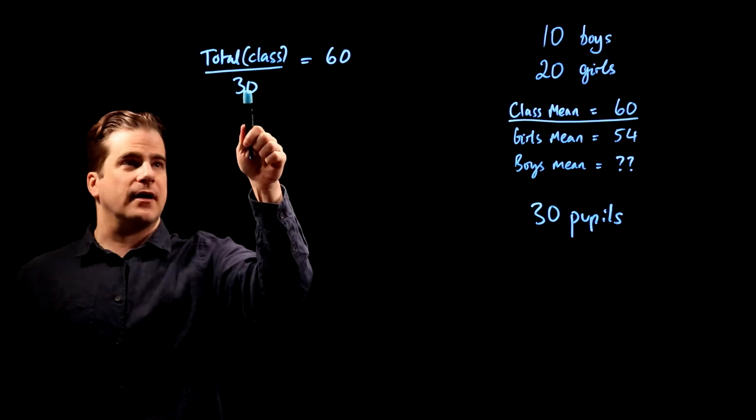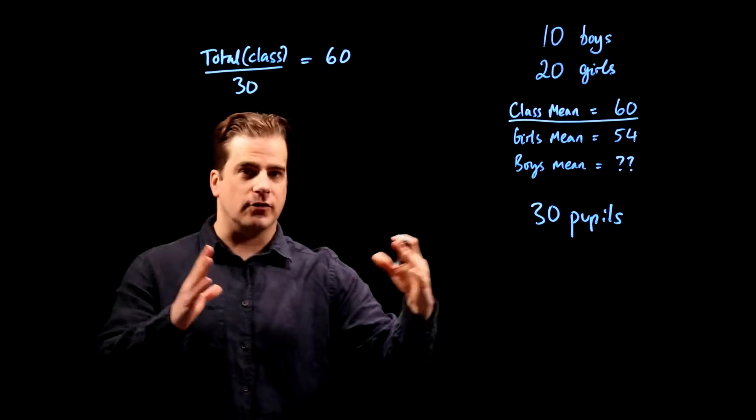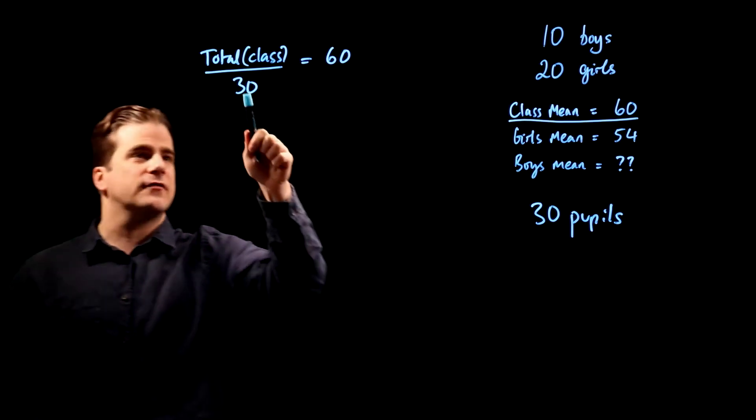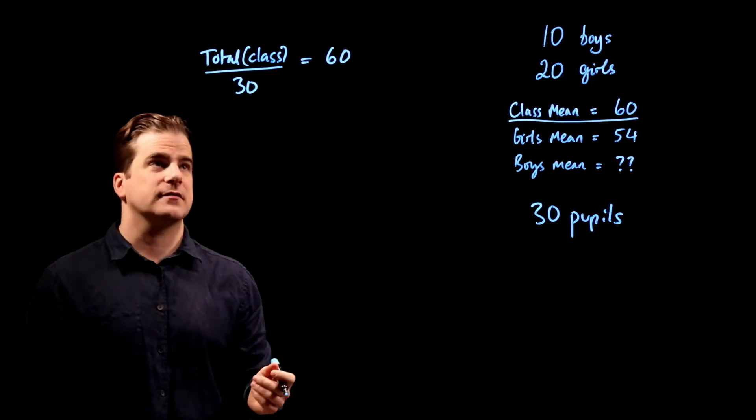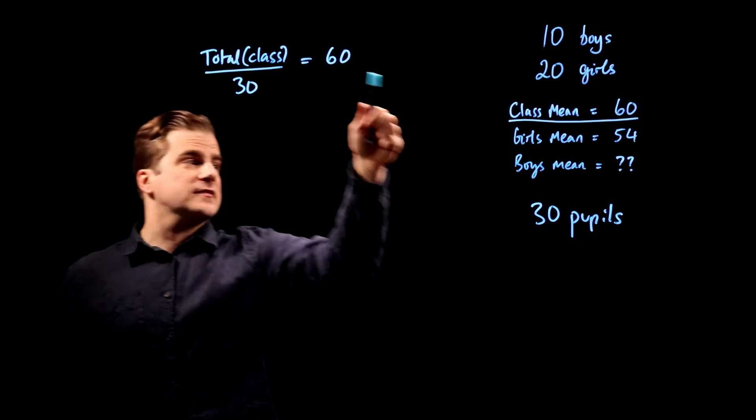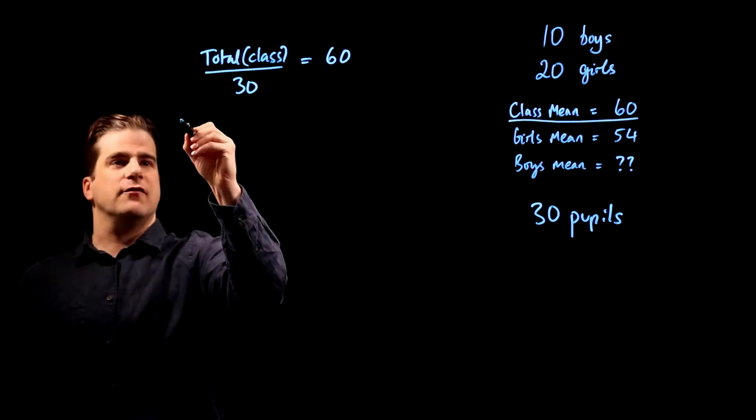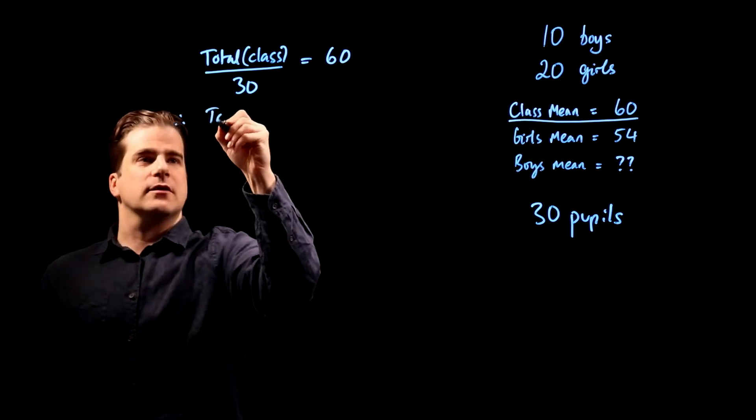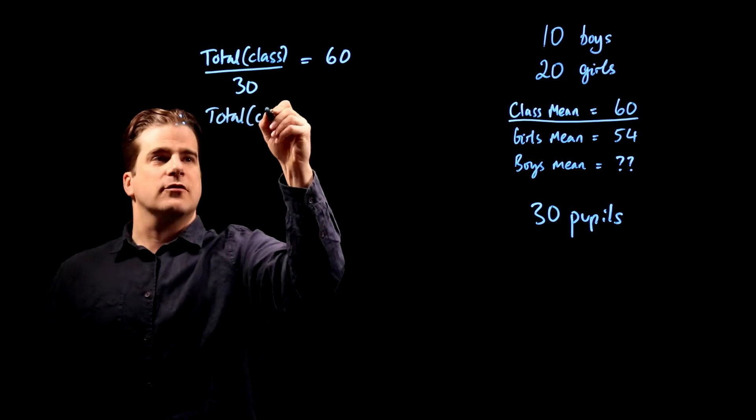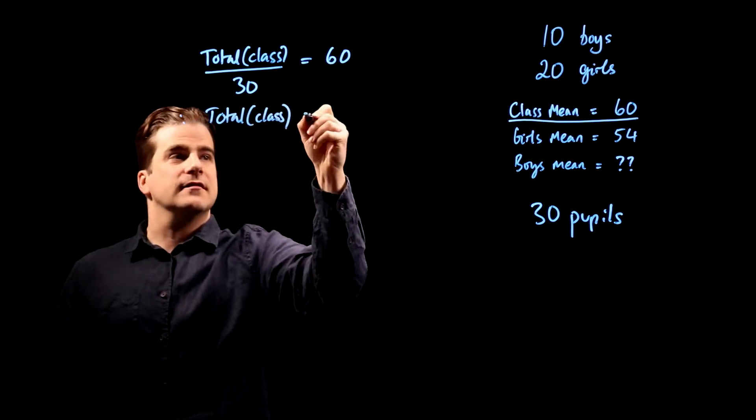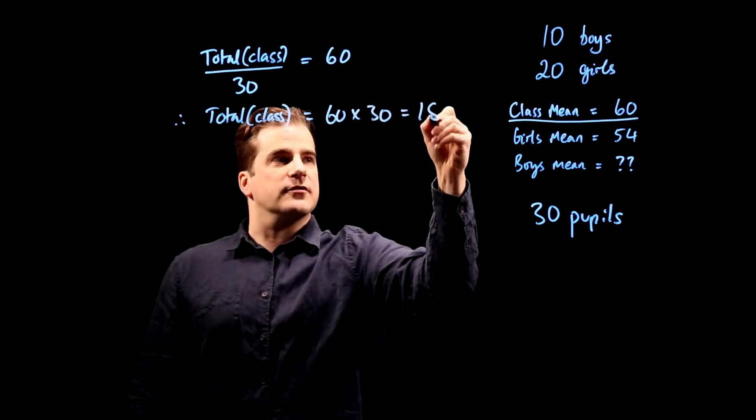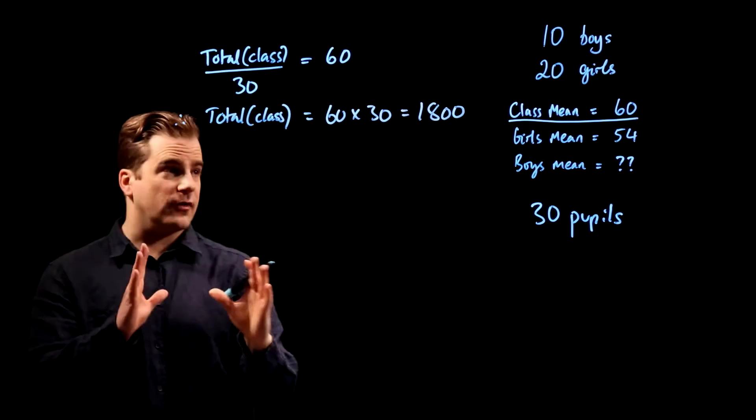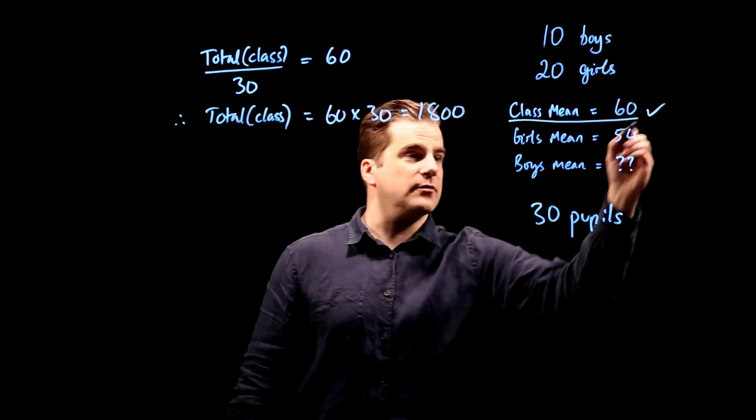Divided by the total score that they got all together, divided by the number of pupils. That's what mean is - total divided by the number of pupils, and that equals 60. So therefore, the total score for the class is equal to 60 times 30, which is 1,800. We've got the total for the class, that's that one dealt with.